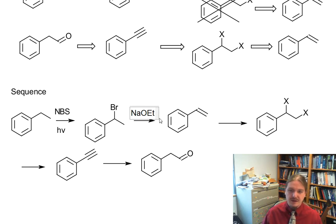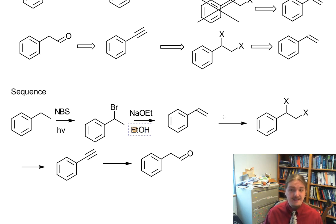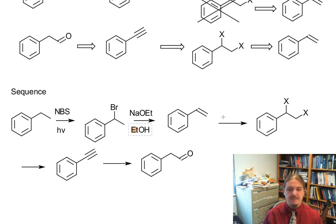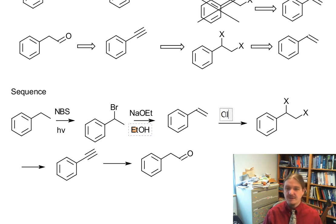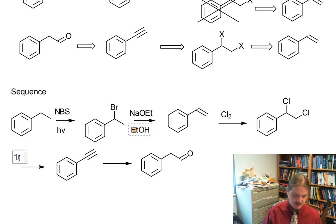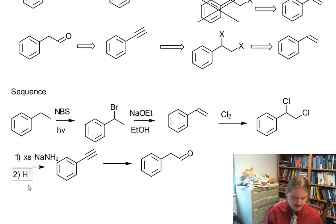Now we want to do an elimination reaction, and I'm always going to pick elimination conditions that look like E2 eliminations, because E2 eliminations are concerted and easier to control. E1 elimination conditions compete with the SN1 reaction, and we certainly don't want that. In this particular case, there's only one possibility — there's no other regiochemical outcome, so we don't have to worry about that. The alkene can react with halogens, so I'm going to choose chlorine — but bromine would work here — to make the vicinal dihalide.